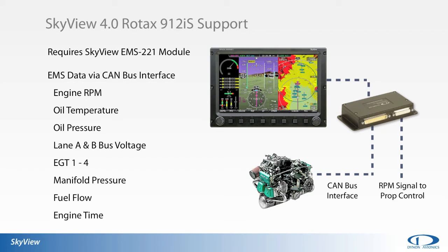The SkyView EMS 221 module and 4.0 firmware can also output the available RPM signal to an electronic prop control unit.